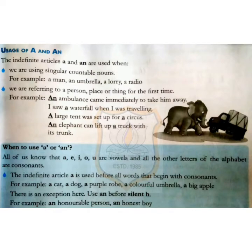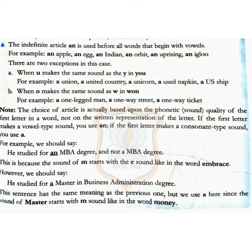The indefinite article 'an' is used before all words that begin with vowels. For example: an apple, an egg, an Indian, an orbit, an unsurprising, an igloo.